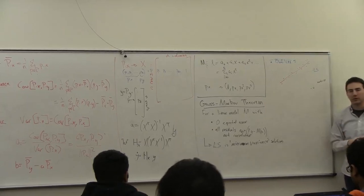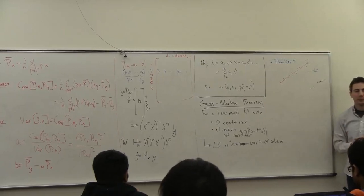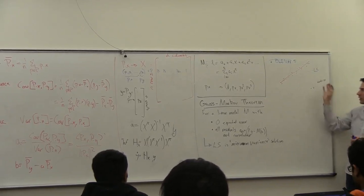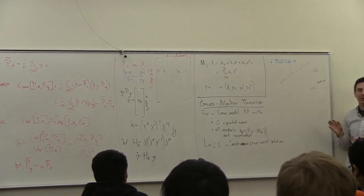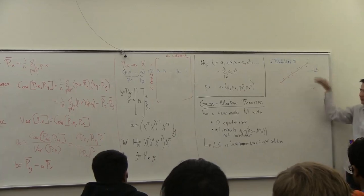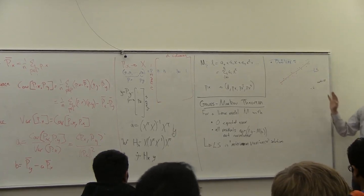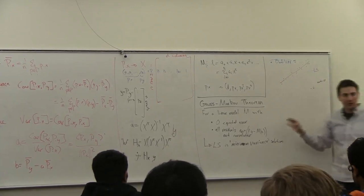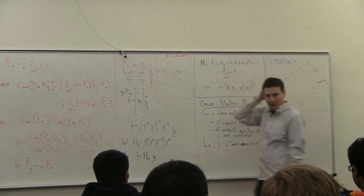What's another problem with least squares? The rest of the lecture will be kind of an overview of some of the techniques for handling some of these problems. So, what's another problem with least squares?